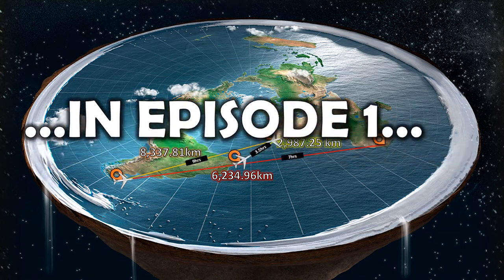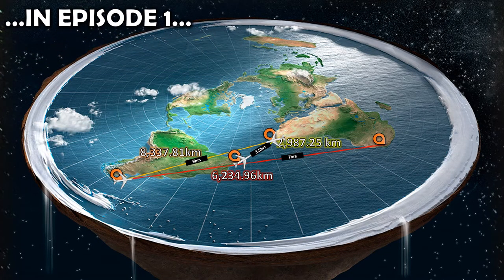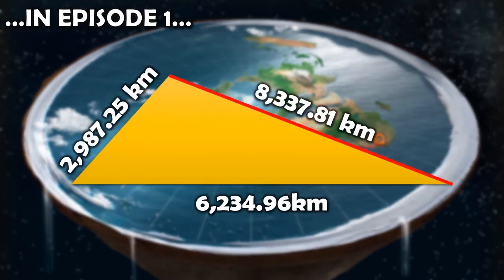In Episode 1 we looked at physical distances, and how the flat Earth model creates an impossible triangle where the greatest distance is not represented by the greatest line.